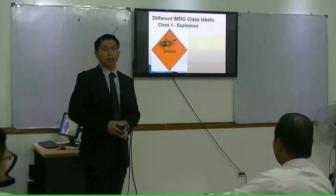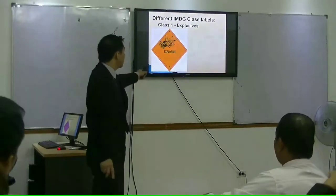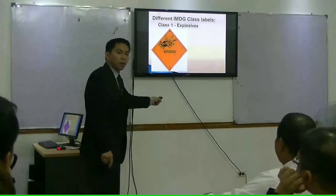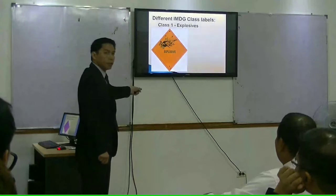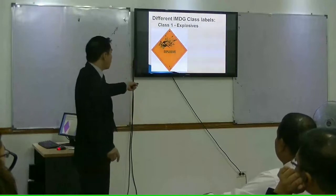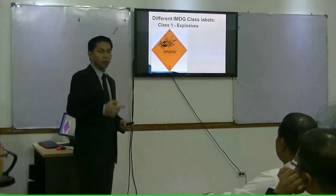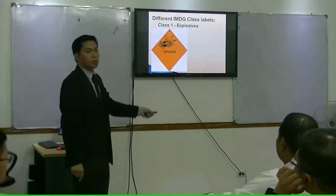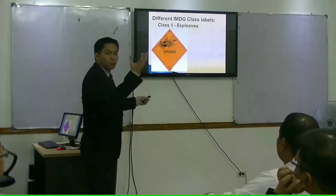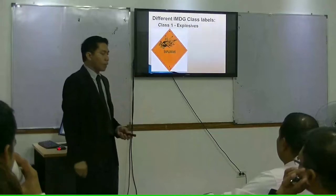There is a technique on how to distinguish this kind of class and label. For example, this explosive is Class 1. In this label, there is a certain number, so you can easily distinguish it by the number. You have in mind that Class 1 is explosives. When you see a label with that number, it is already identified as explosive. It also shows a picture of an explosion.